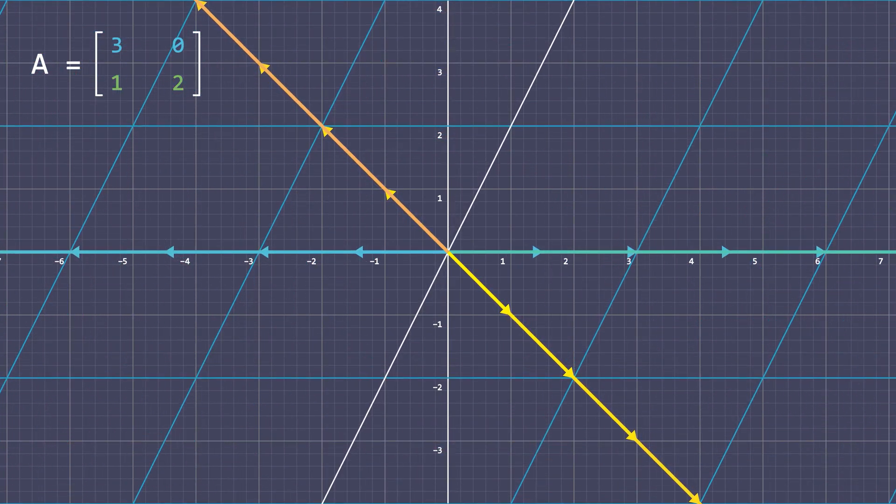Any other vector just gets knocked off its span, we saw this earlier. These special vectors that remain on their own span during the transformation are called the eigenvectors of the transformation. And each eigenvector has associated with it what's called an eigenvalue, which is just the factor by which it is stretched or shrunk during the transformation.